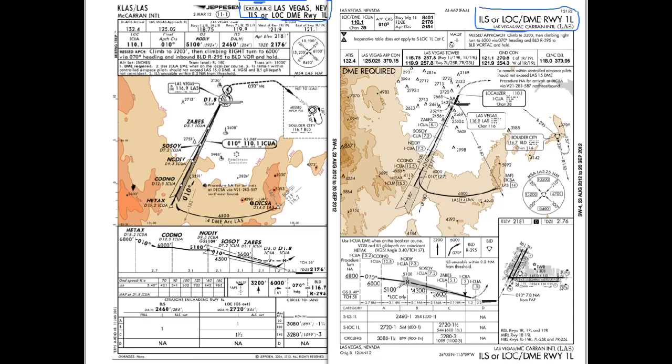The second item at the top on the Jeppesen chart is the date the approach chart was revised, along with the chart number. You can easily tell this chart was modified the 2nd of March 2012, making it easy to verify currency. The 11-1 at the top is standard Jeppesen numbering — approaches always start with 11 for an ILS or precision approach, numbered sequentially: 11-1 might be runway 1 left, 11-2 would be 1 right, and so on.